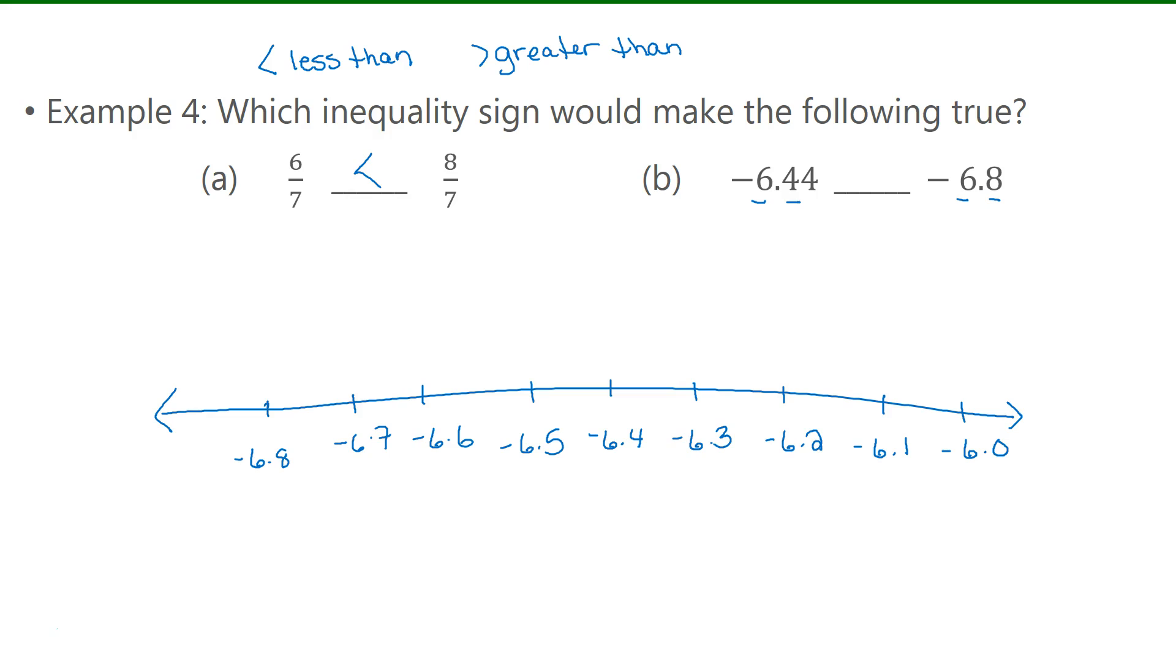Okay. So we have negative 6.8 here, and negative 6.44, let's say right here, just before that, like, halfway point. So negative 6.44 is further to the right on the number line. So I'm going to say that that one is greater.